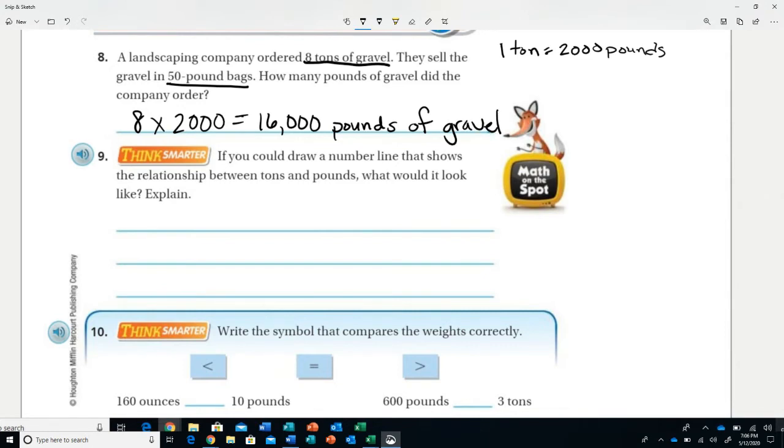If you could draw a number line that shows the relationship between tons and pounds, what would it look like? Explain. Well, kind of like the one with ounces and pounds on the other side, you would have some kind of number line from zero to 2,000. The bottom here would be your ton, and a pound would be like way, way, way over here - it would barely make the line. You would need 2,000 little spaces to represent each pound before you got to the 2,000. That's one ton.